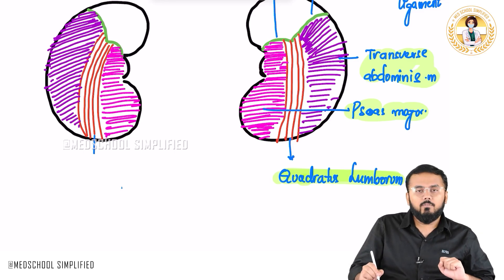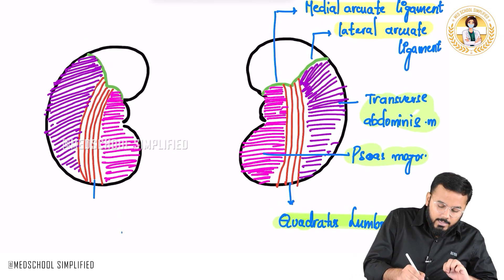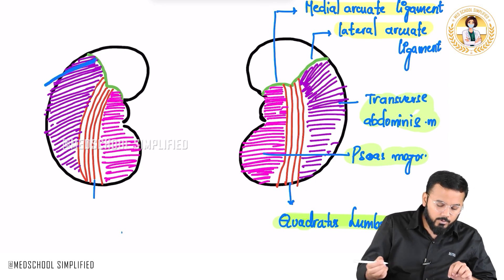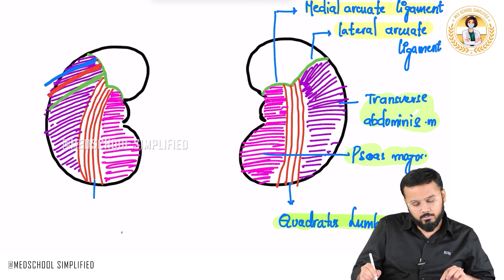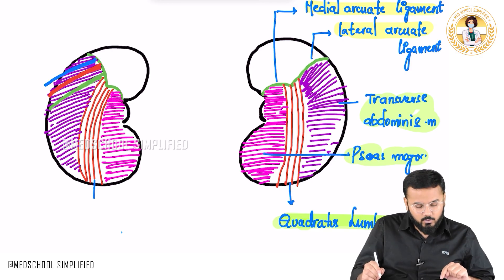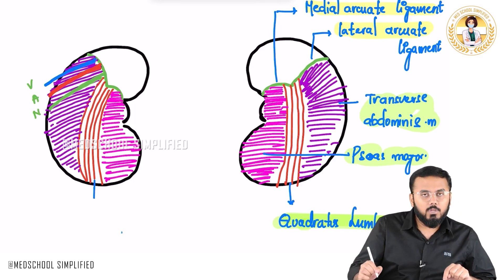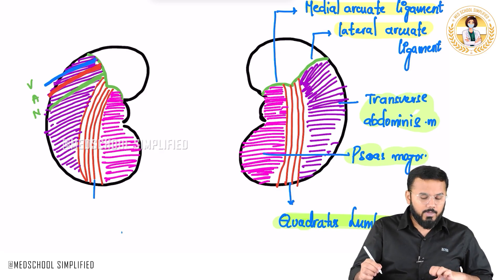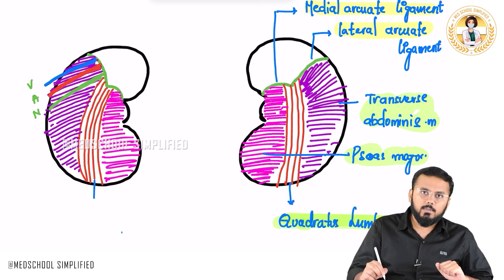After the muscles, we have got three important vessels. From here we have a vein, an artery, and a nerve coming out. These are called the subcostal vessels — consisting of the subcostal vein, subcostal artery, and subcostal nerve.